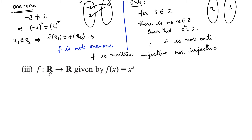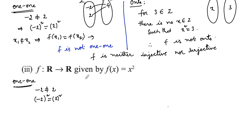Now let's check the third one: f from ℝ to ℝ given by f(x) = x², where domain and codomain are both real numbers. Since integers are also real numbers, we can use the same example as before: −2 ≠ +2, but (−2)² and (+2)² are both equal. For two distinct numbers we get the same image, hence f is not one-to-one.